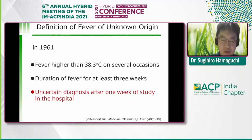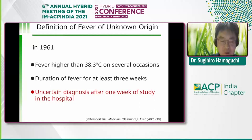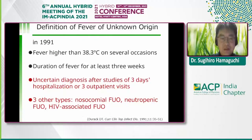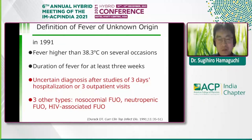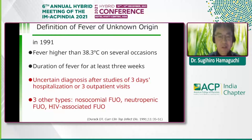The third criterion — uncertain diagnosis after one week of study in the hospital — is one I don't like, because they didn't describe which type of hospital, what size of hospital, or where the hospital is located. In a later revision, the first two criteria remained the same, but the third was changed to uncertain diagnosis after three days of hospitalization or three outpatient visits, which is also unclear since hospital quality and size vary considerably.